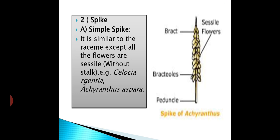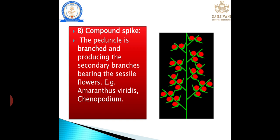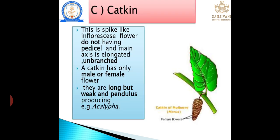Compound spike: all characters are similar to a simple spike, but the peduncle is branched and flowers are sessile. For example: Amaranthus and Chenopodium. Next is catkin: this is a spike-like inflorescence. The main axis is unbranched. The catkin bears only male or female flowers; they are long but weak and pendulous.